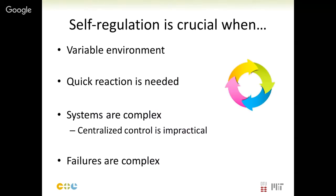So why is self-regulation crucial? It's crucial in certain conditions — for instance, when we have a variable environment. When cyber attackers attack a supply chain in different ways, we need to adjust to different attacks or failures; we need these regulation processes to adapt. It's also crucial when we have a quick reaction requirement: every minute that passes, the quicker we react the better it is for the company. In some cases, crucial processes have been affected and time becomes of the essence.